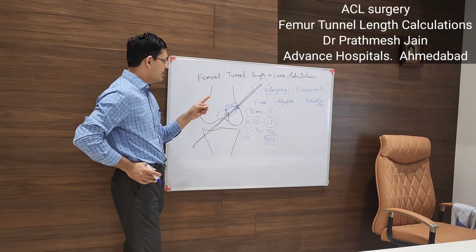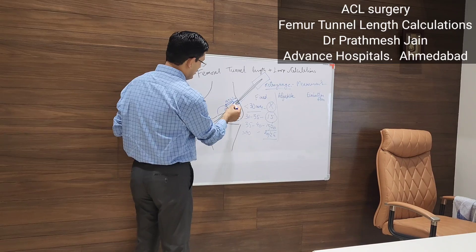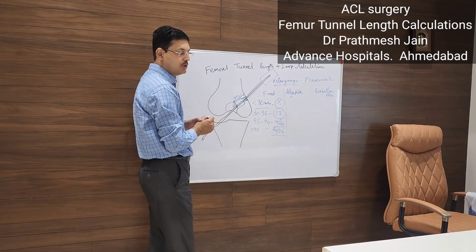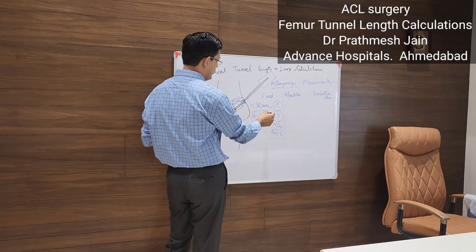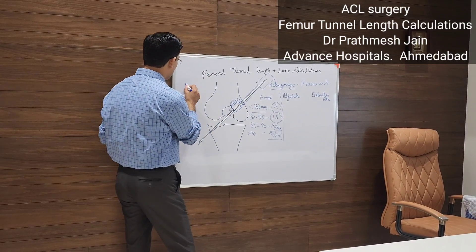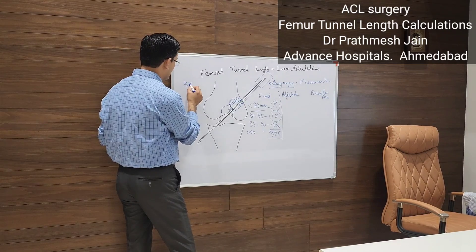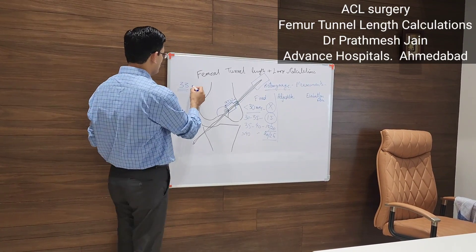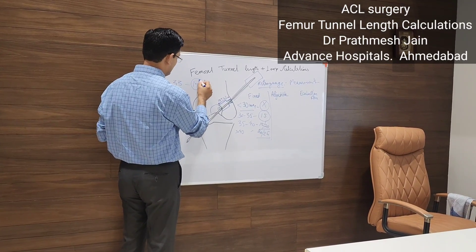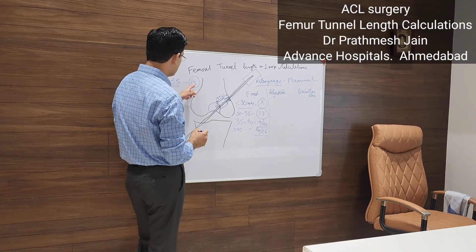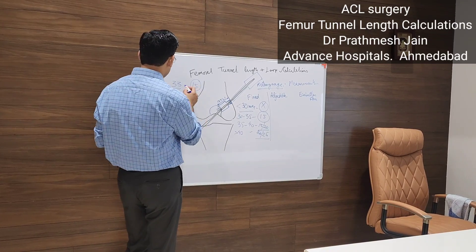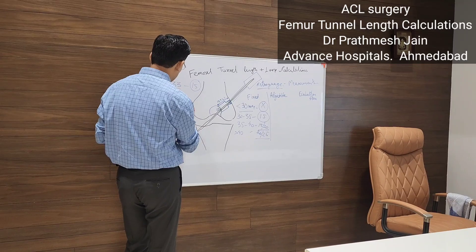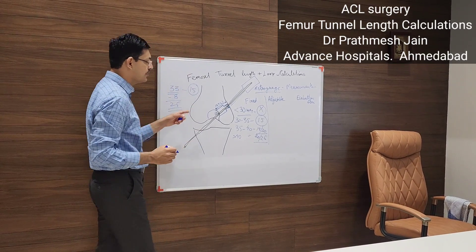You need a flipping distance, so the depth you drill should be 7 mm less than the tunnel length minus the button size. For example, if your femoral tunnel length is 33 mm and you want to use a 15 mm button, 7 mm is the mandatory flipping distance. So you deduct 8 from 33, giving 25 mm — you must drill at least 25 mm.